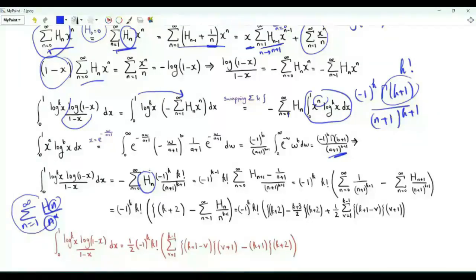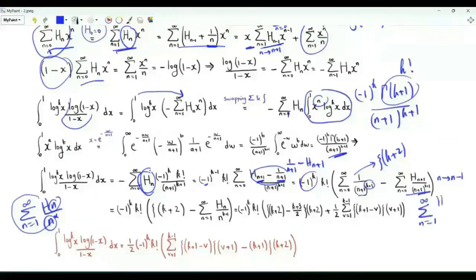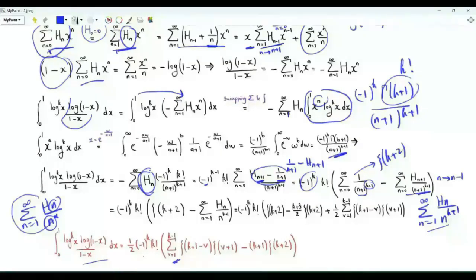We multiply by minus 1 to make it 1 over n plus 1 minus h_{n+1}. This becomes minus 1 to the power k times: the first sum is 1 over n plus 1 to the power k plus 2, which is zeta of k plus 2, then minus the summation n from 0 to infinity of h_{n+1} over n plus 1 to the k plus 1. Changing n to n minus 1, this sum is the summation n from 1 to infinity of h_n over n to the k plus 1, which is exactly our Euler sum with alpha equal to k plus 1. We now have the value of this integral in terms of a finite sum involving the zeta functions, valid for any positive integer k.